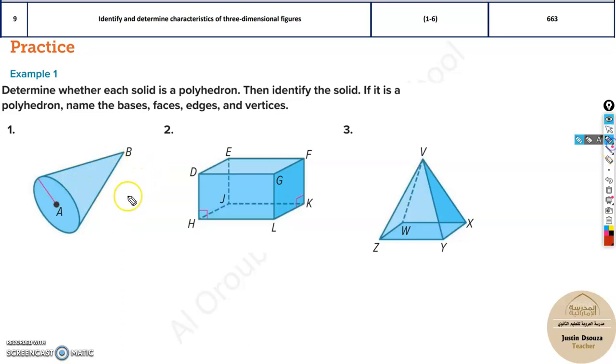This is not a polyhedron because it should be flat, like for example this one, a rectangular pyramid. Now this is a polyhedron. This is a base and you can see these are all faces of the object. So this is a polyhedron. Now we can see this first answer is very easy, it's not a polyhedron, it's a cone.